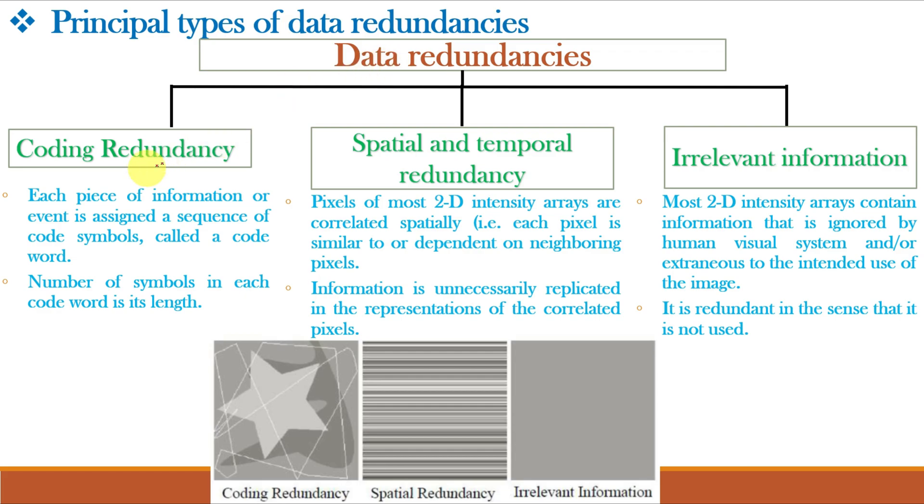Let us start. Starting with the last slide of previous video class, data redundancies can be coding redundancy, where repetitive codes can be removed; spatial and temporal redundancy, also known as interpixel redundancy, as repetitive information is present between the pixels; and irrelevant information or psycho-visual redundancy, as information is not essential for normal visual processing.